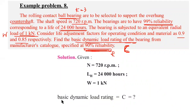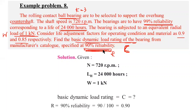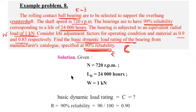We have to find the value of the basic dynamic load rating, capital C. Additionally, the required reliability of the bearing is given as R equals 90%, which we convert to 0.9 by dividing by 100.